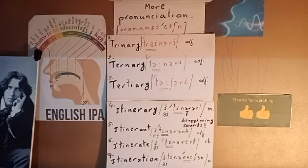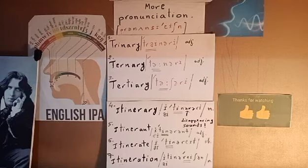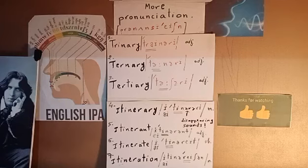The second word is also an adjective: ternary. It's also a three-syllable word. The first syllable 'tern' with a long 'er' should be stressed. We say ternary. And ternary means composed of three parts.